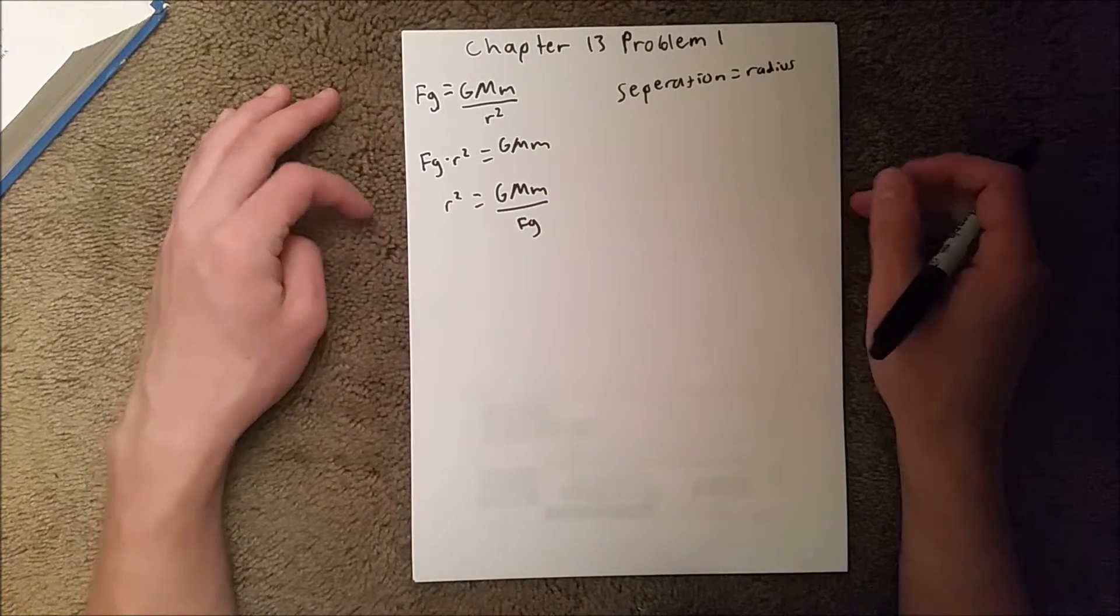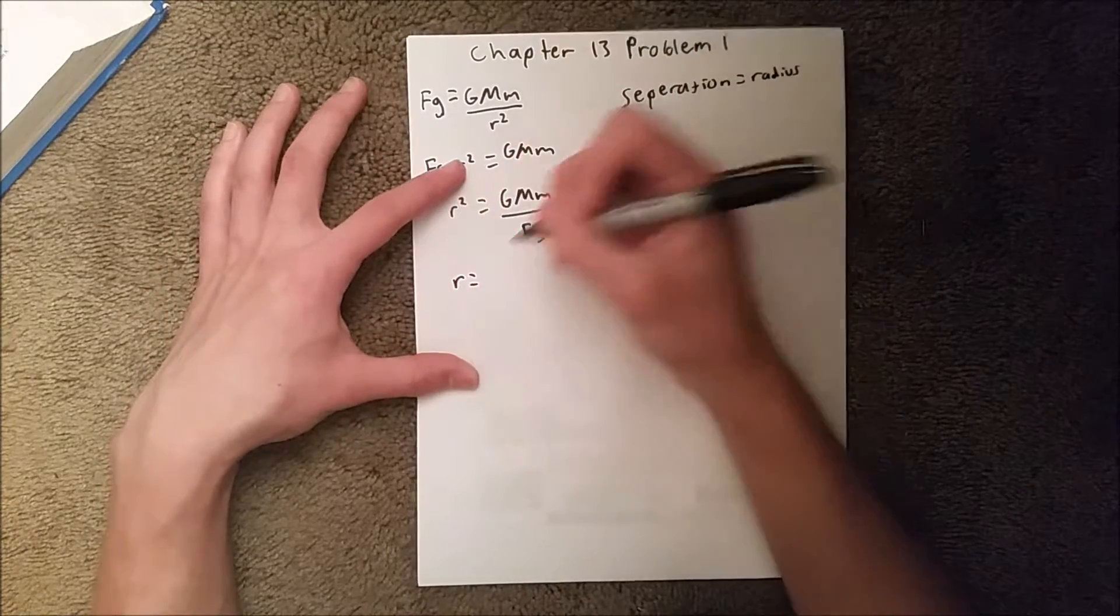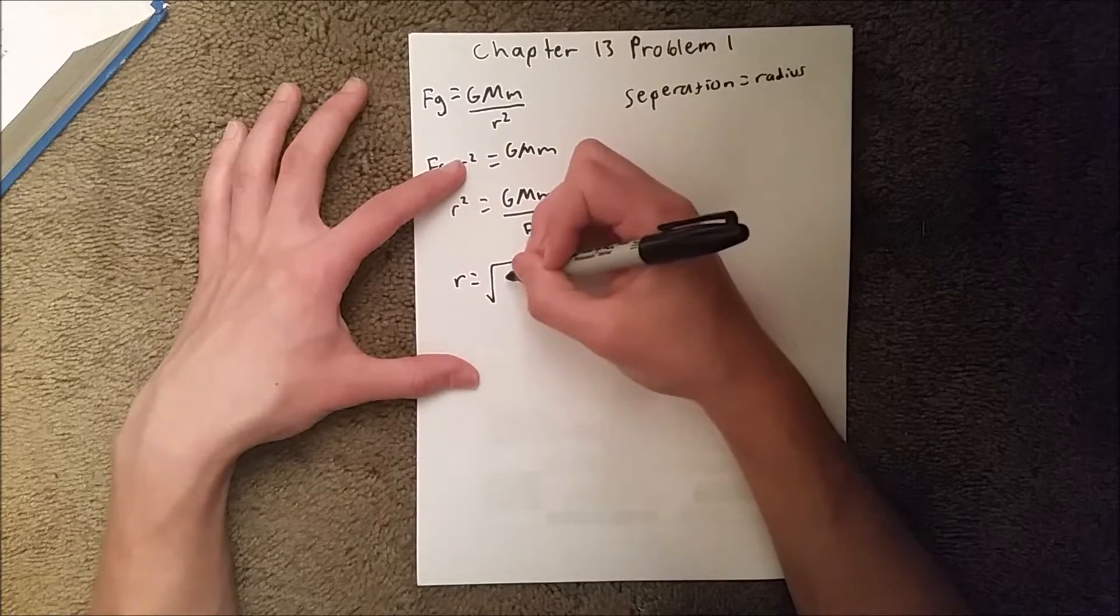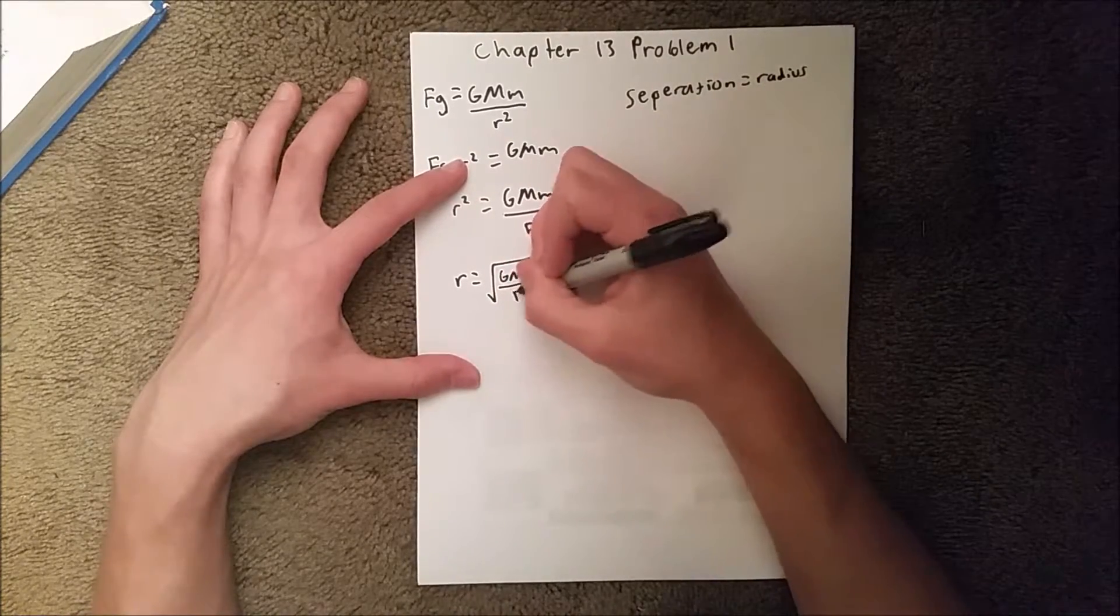Finally, we square root both sides, giving us r equals the square root of GMm over F_g.